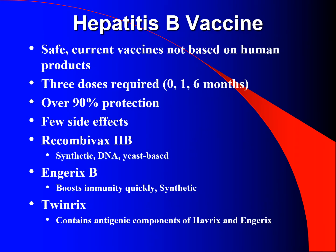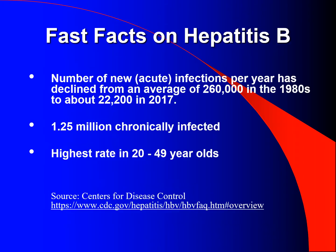Hepatitis B vaccine: safe. Current vaccines are not based on human products. Three doses are required at zero, one, and six months. Over 90% protection with few side effects. Fast facts on hepatitis B: the number of new acute infections per year has declined from an average of 260,000 in the 1980s to about 22,200 in 2017. 1.25 million are chronically infected. The highest rate is in the 20–49 year old age category.